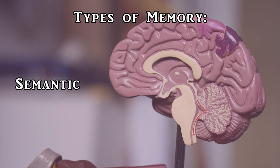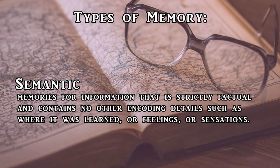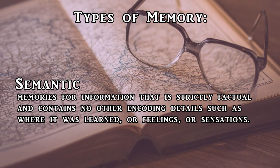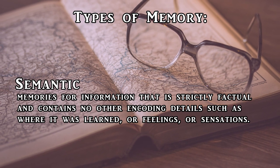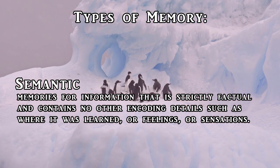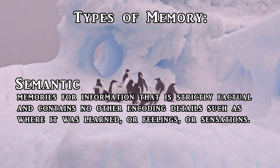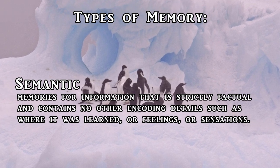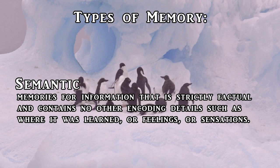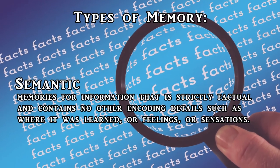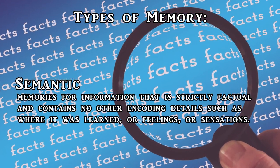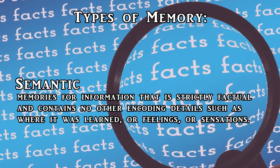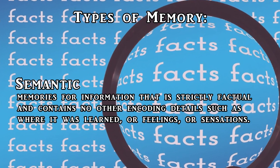The second type of memory is called semantic memory, which is when you have memory for information but do not have memory for the details surrounding the learning of that information. For example, even if you remember that Antarctica is located in the southern hemisphere, you probably don't remember where you were or how you were feeling when you first learned that. Semantic memory is just the facts with no frills. Facts about yourself like your name, how many siblings you have, and the town you were born in also count as semantic memory.